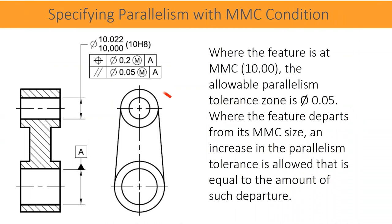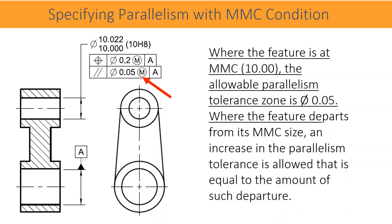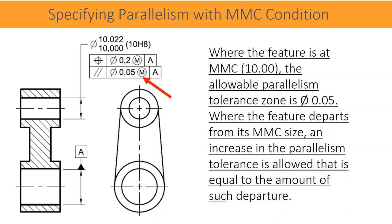Specifying parallelism with maximum material condition: where the feature is at MMC (10.00), the allowable parallelism tolerance zone is 0.05. Where the feature departs from its MMC size, an increase in the parallelism tolerance is allowed that is equal to the amount of such departure.